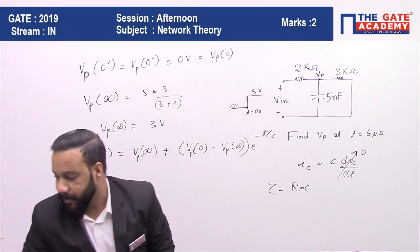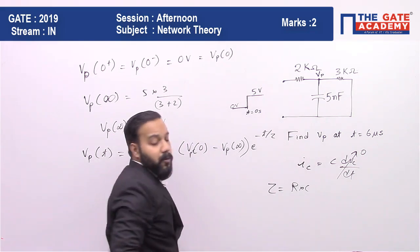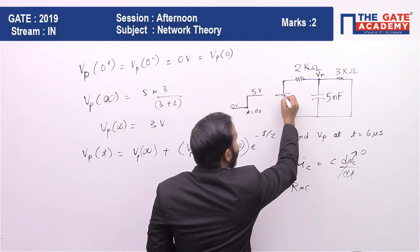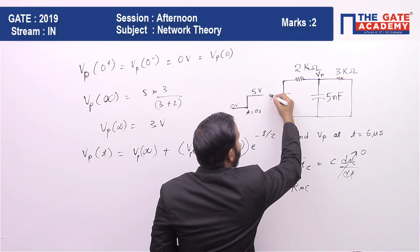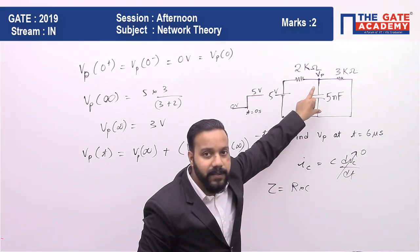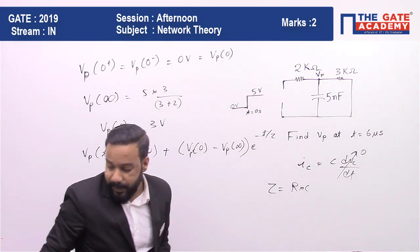If you can see this circuit, we are analyzing for the time when the change in voltage has occurred and we have 5 volt here. When you calculate the equivalent resistance for this capacitor, we will short circuit the voltage source.